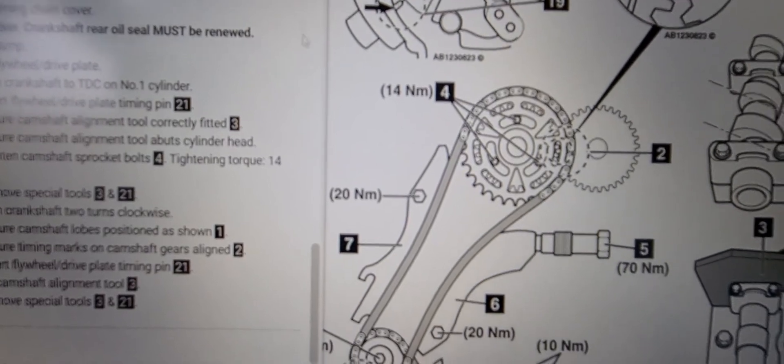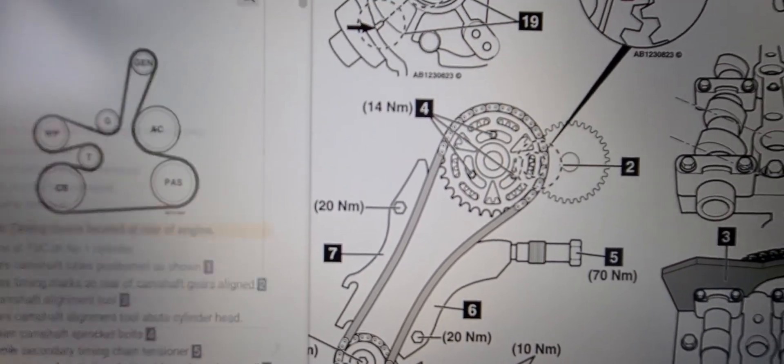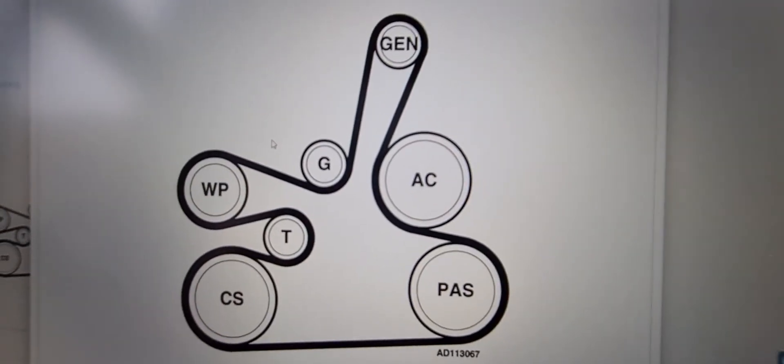And finally we will look at the drive belt diagram which is just here. That's what that looks like.